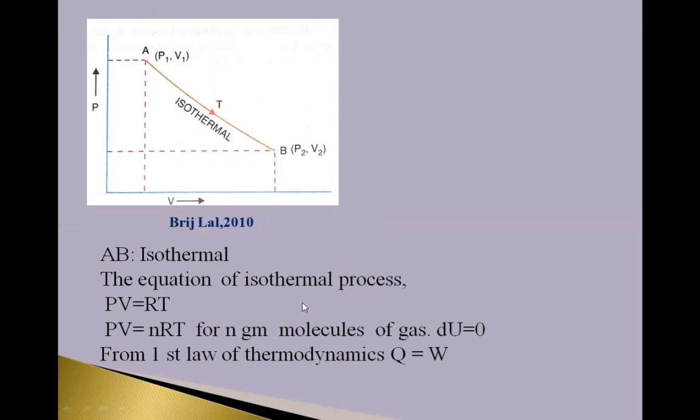The equation of isothermal process is PV=RT, PV=nRT for n gram molecules of the gas. And change in internal energy dU, U2 minus U1, is zero. From first law of thermodynamics, Q equals W. This is work done.